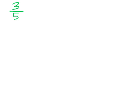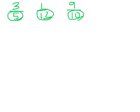Now I'm going to show you how I would do it. If I had these three fractions — three-fifths, one-twelfth, and nine-tenths — and they wanted me to compare and order them, I would go ahead and make all of them have common denominators first so that I could compare them. The denominators I'm working with are five, twelve, and ten.